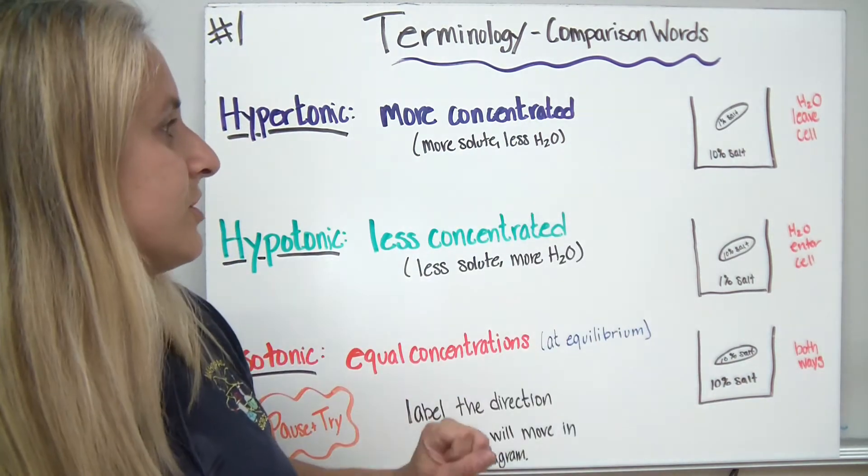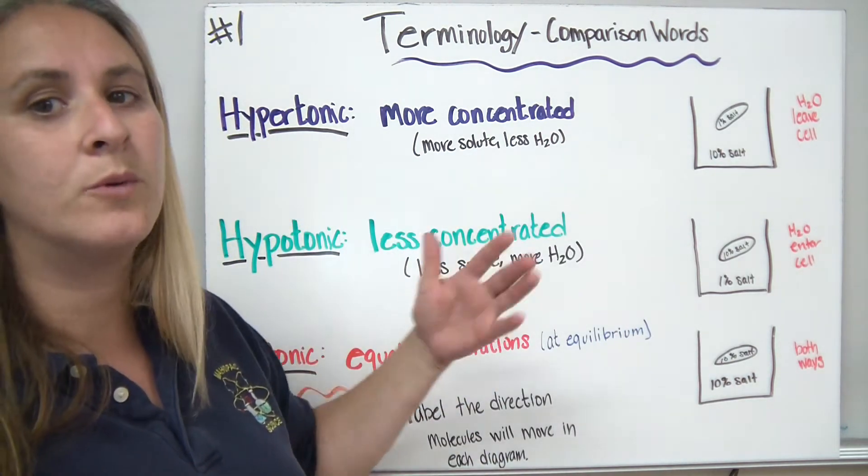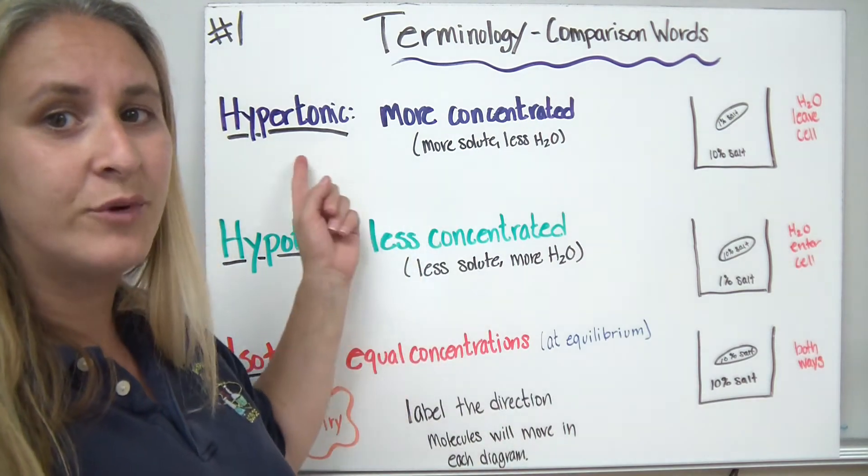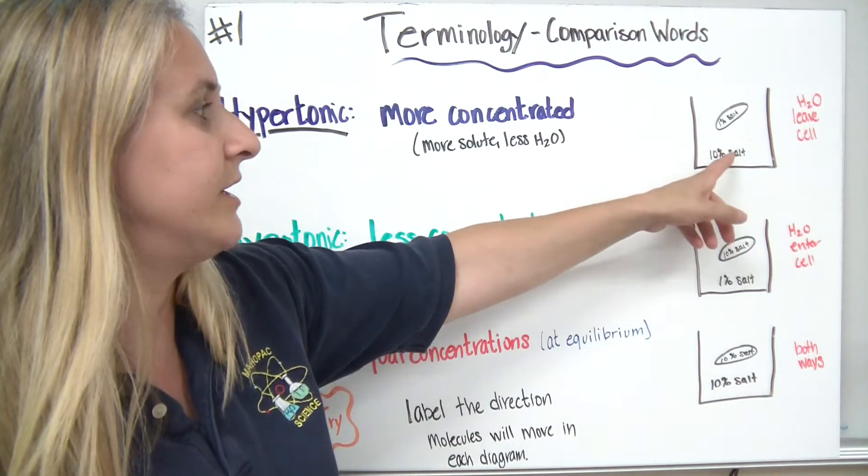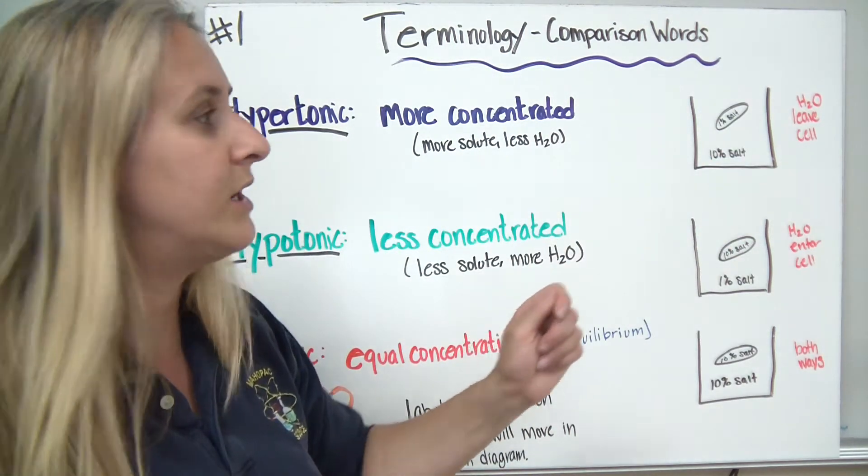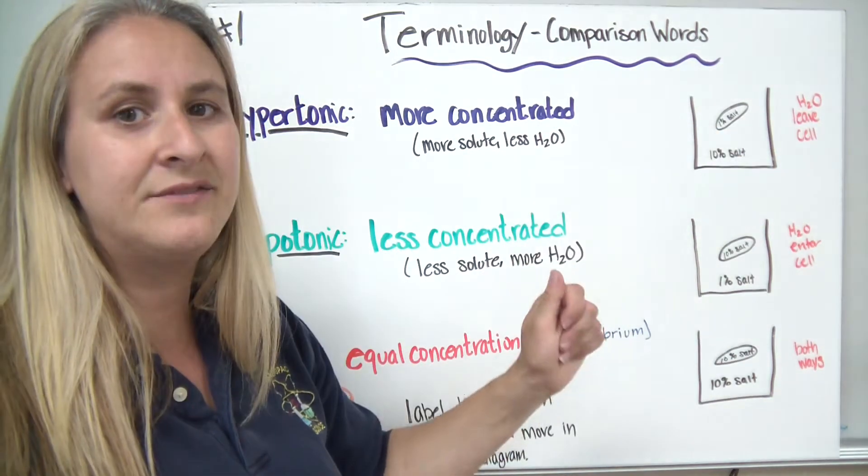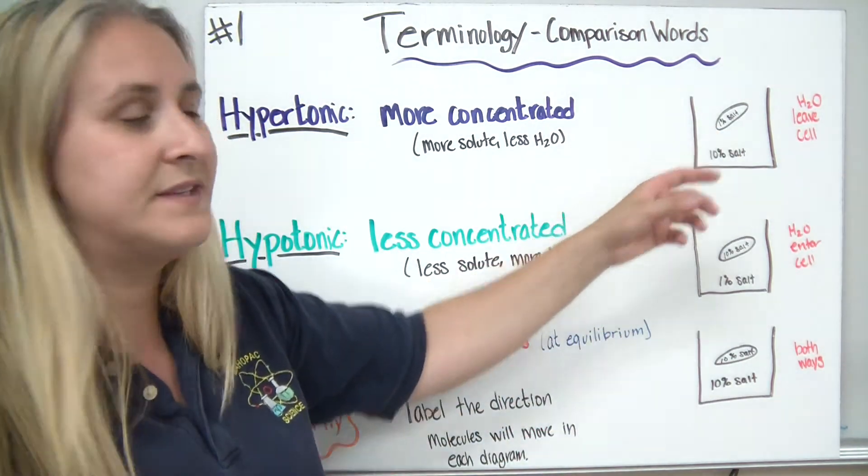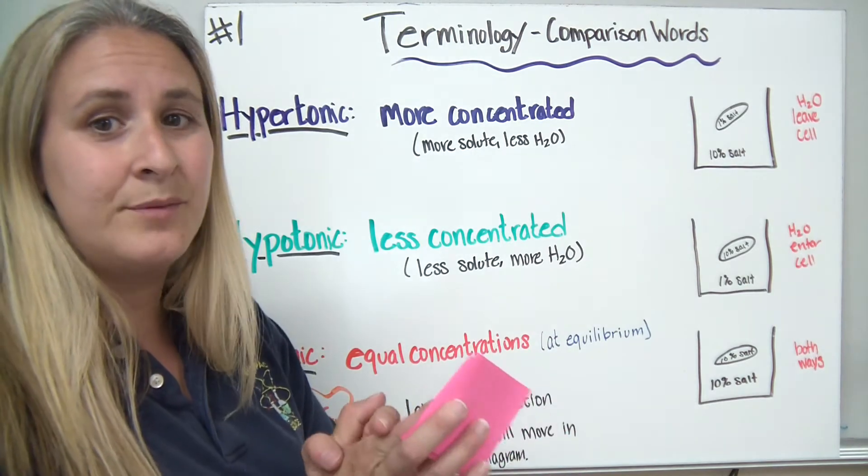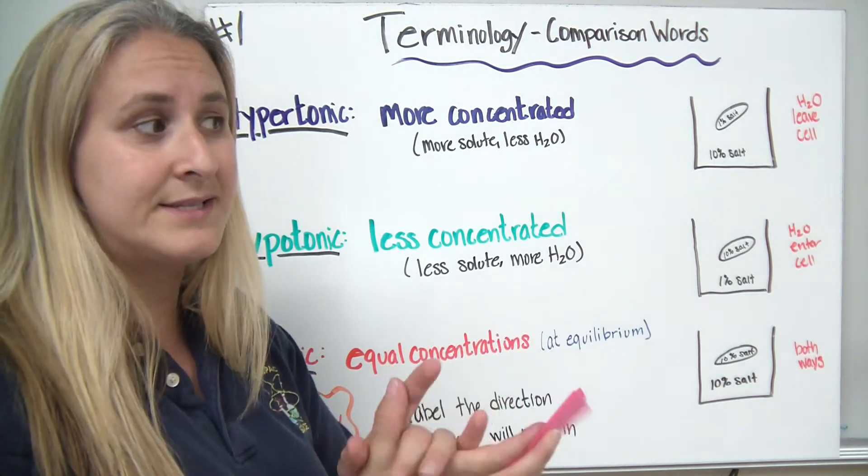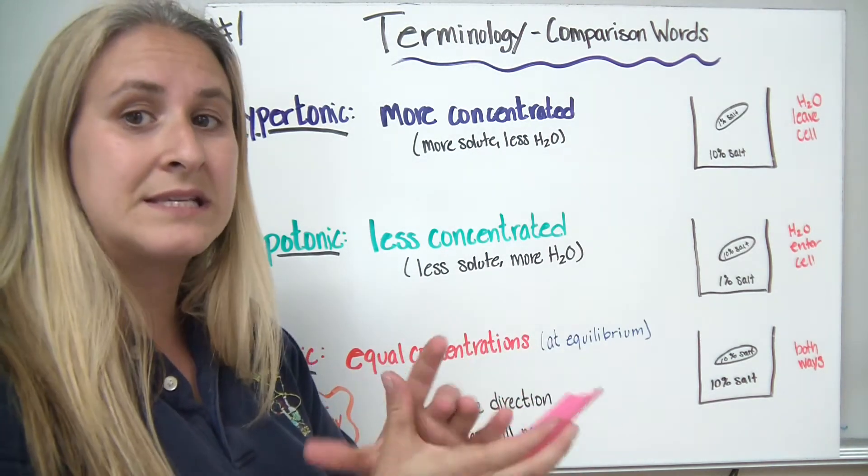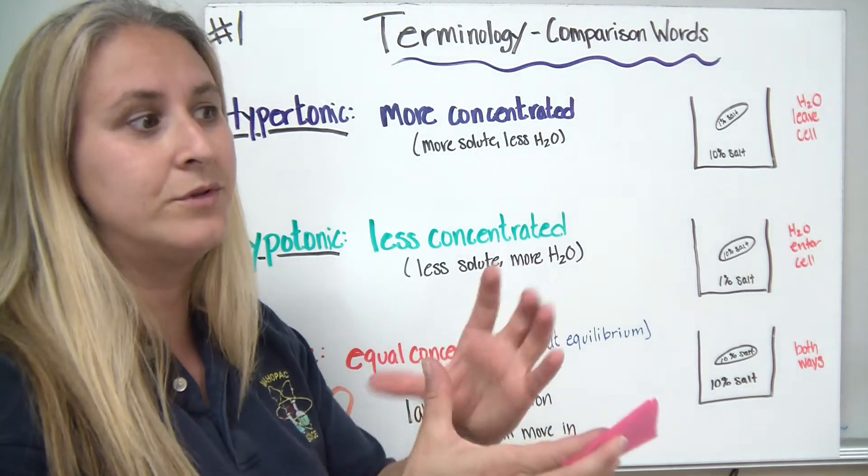Now, in each of these situations, we try to think about what would happen to the cell. If we put the cell into a hypertonic solution, meaning it's going to be more concentrated, and the water leaves the cell, as it leaves the cell, if it's an animal cell, the cytoplasm will shrink. The plant cell will do the same thing. The cytoplasm will shrink. It will lose water.